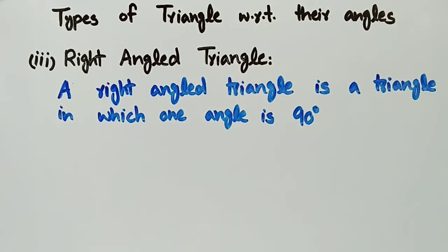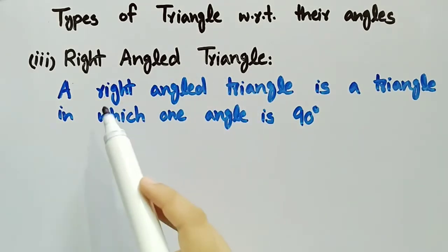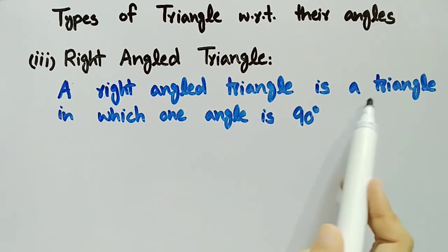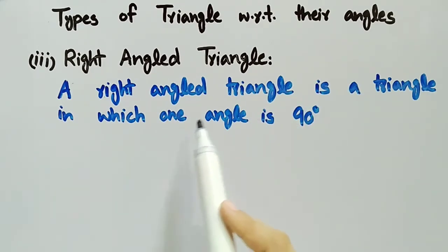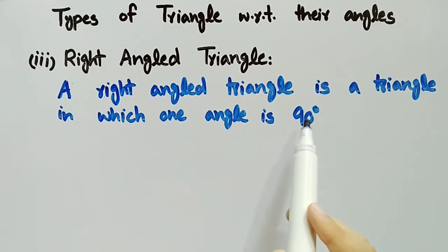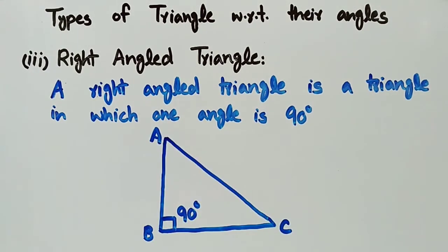The third type is right angle triangle. A right angle triangle is a triangle in which one angle is exactly 90 degrees. For example, consider this triangle.